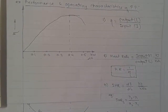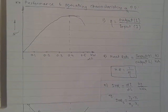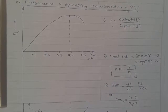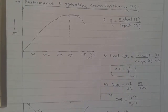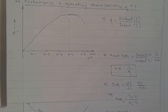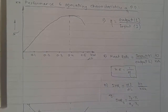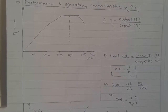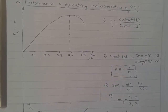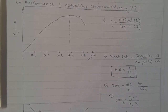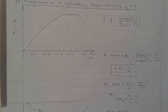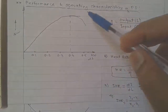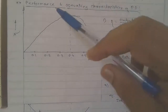Hello friends, this is the third lecture on unit number 6, that is Economics of Power Generation. In the first lecture we completed cost of generation, monthly electricity bill, and depreciation cost — how to calculate depreciation cost, how to calculate monthly electricity bill, and how to calculate cost of generation. In the second lecture we completed two important parameters: load curve and load duration curve. In this lecture we will continue with the performance and operating characteristics of a power plant.